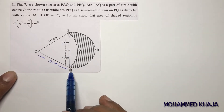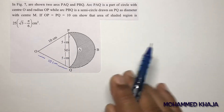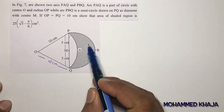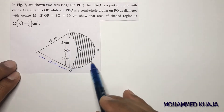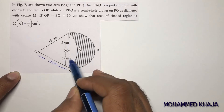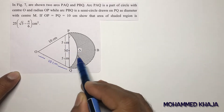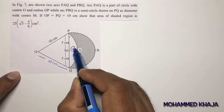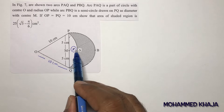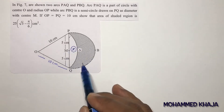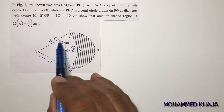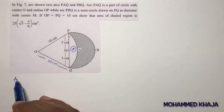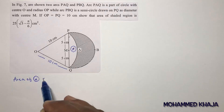Since OP, OQ, and PQ are all 10, triangle OPQ is an equilateral triangle. We need to find the shaded region. The area of the shaded region equals the area of the semicircle minus a segment X. Segment X is the region PQA, and its area equals area of sector minus area of triangle.